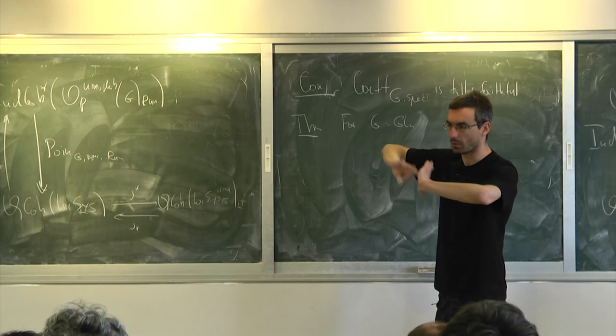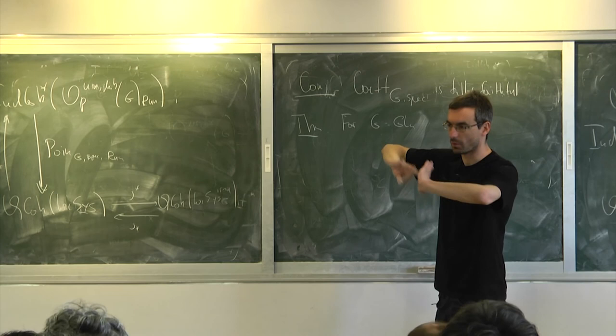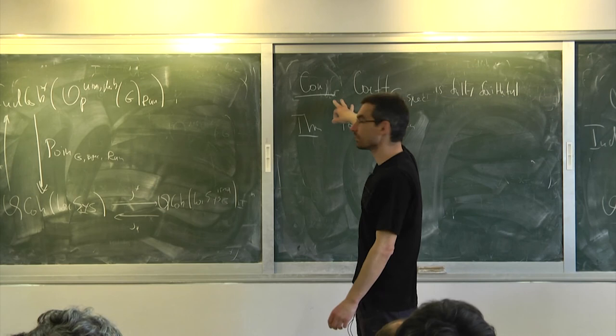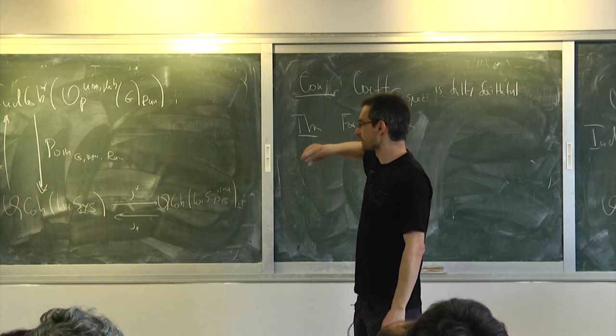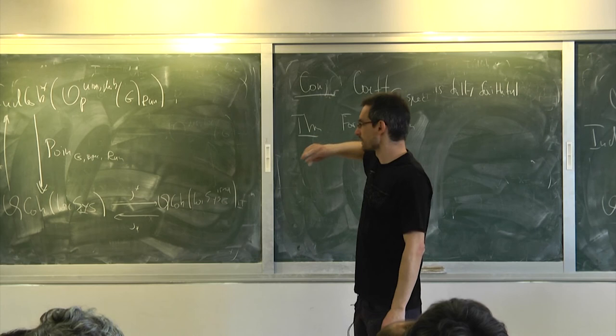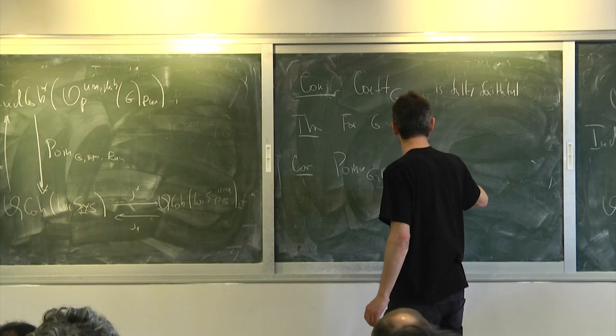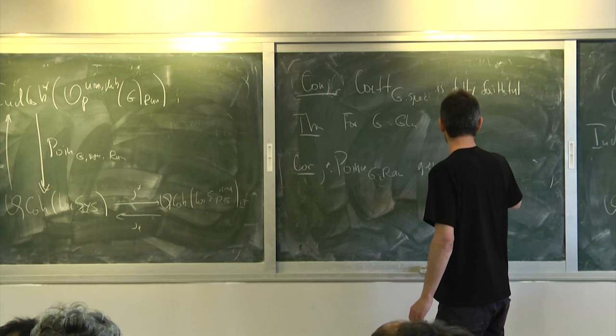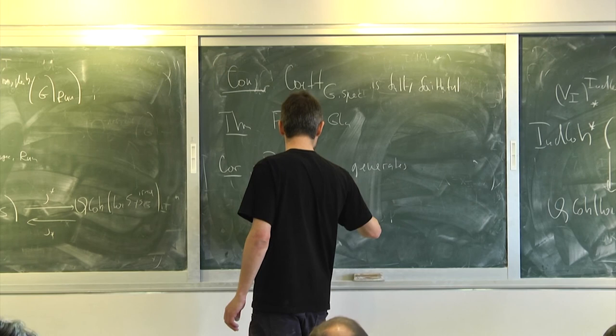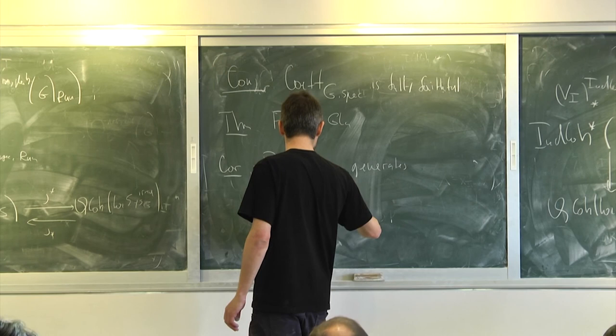This conjecture is supposed to hold always — it's an open conjecture for arbitrary groups. But if you believe this conjecture, the corollary is that this Poincaré series functor, composed with J lower star upper star, generates quasi-co of LocSys G-check, LocSys G, irreducible. That's the input we want — the spectral Poincaré series generates a lot, and that's what we needed.